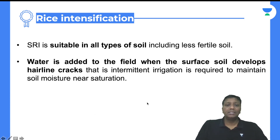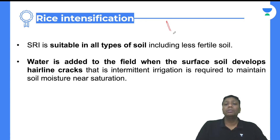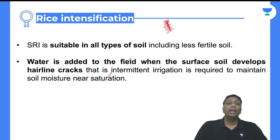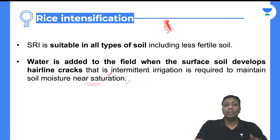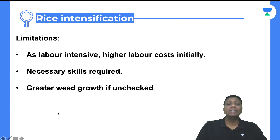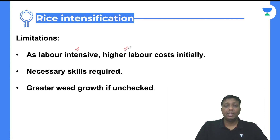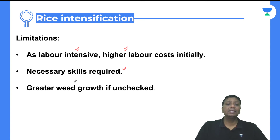Rice intensification is suitable for all types of soils. Water is added to the field when the surface soil develops hairline cracks — that is very important. When hairline cracks start to appear on the soil, you add water properly to solve the issue. Intermittent irrigation is very important — at regular intervals, the crack cannot become severe, soil moisture is maintained, and proper saturation is there. Massive water is not required. There are some limitations: it is labor-intensive, farmers must be involved in the field with higher labor costs at the beginning. Proper nursery nurturing and necessary skills are required. If not checked properly, unwanted plants can grow in the surroundings.